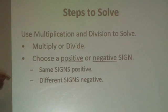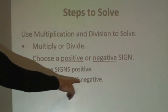So if you have two numbers that are both positive or both negative, then your answer will be positive. And if you have two numbers where one is positive and one is negative, then your answer will be negative.